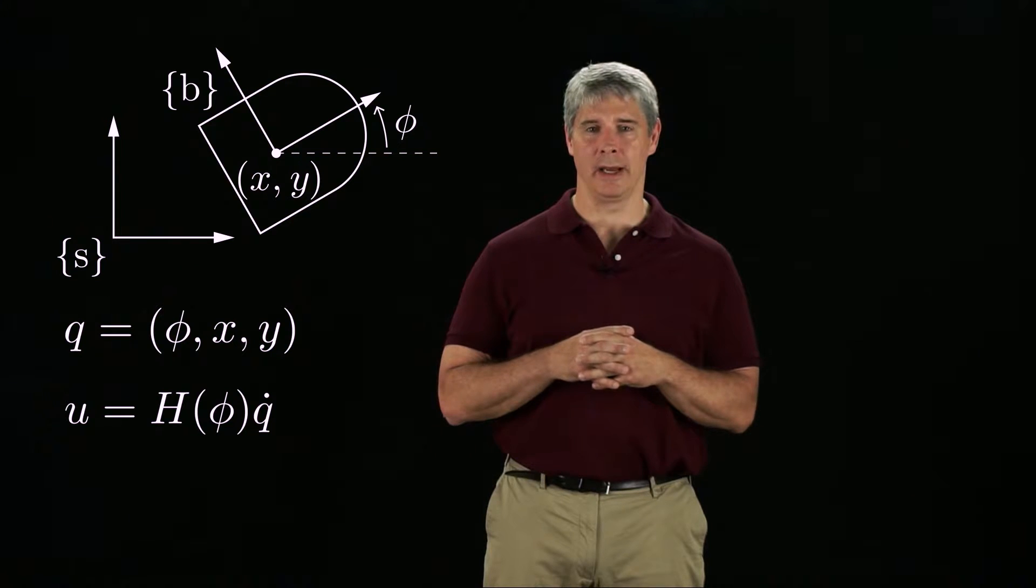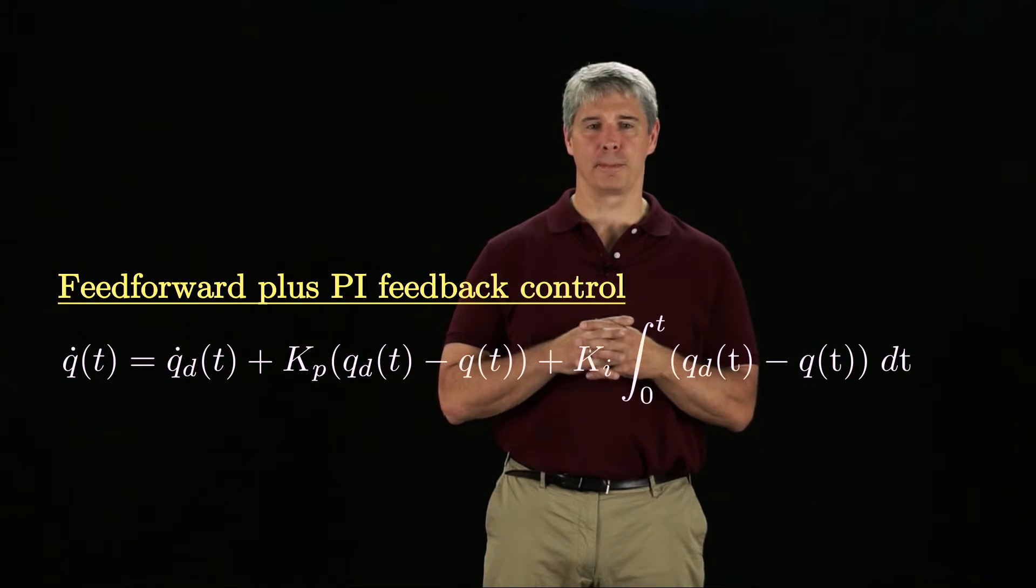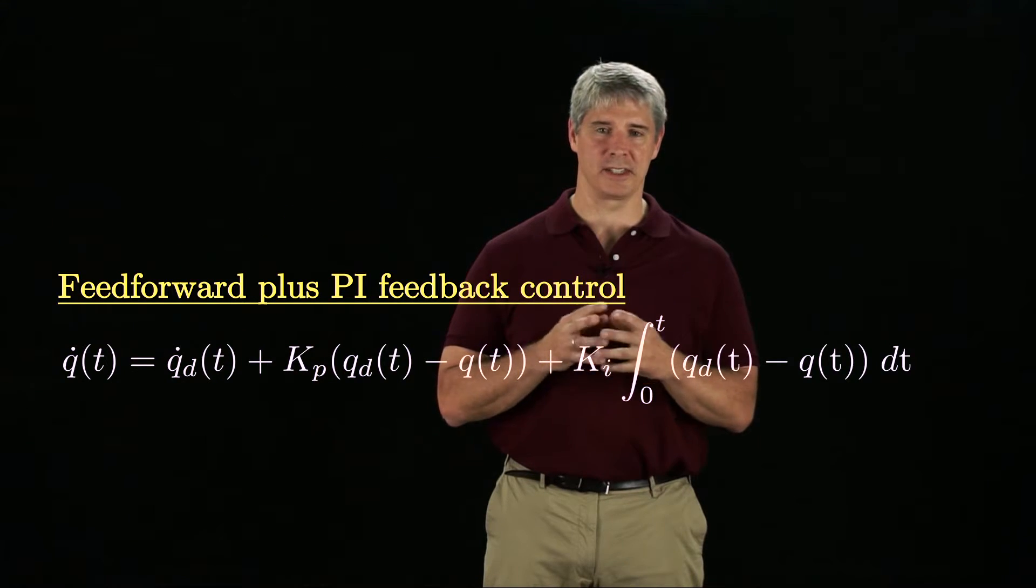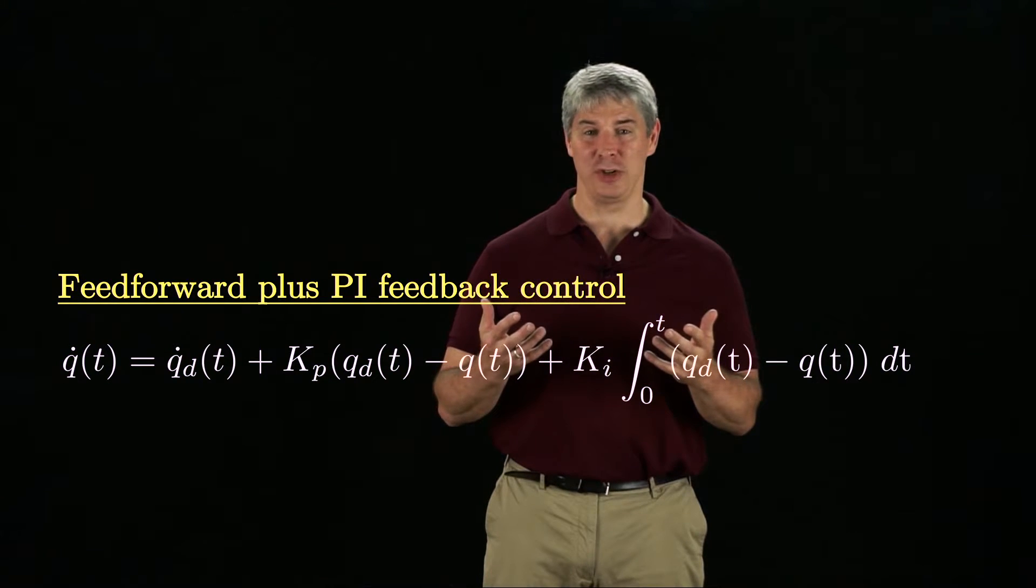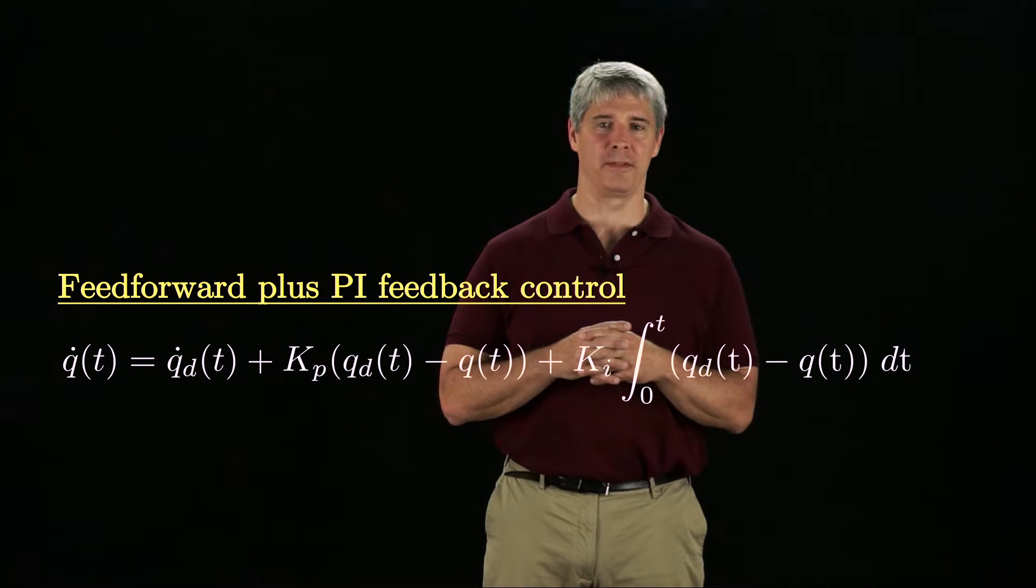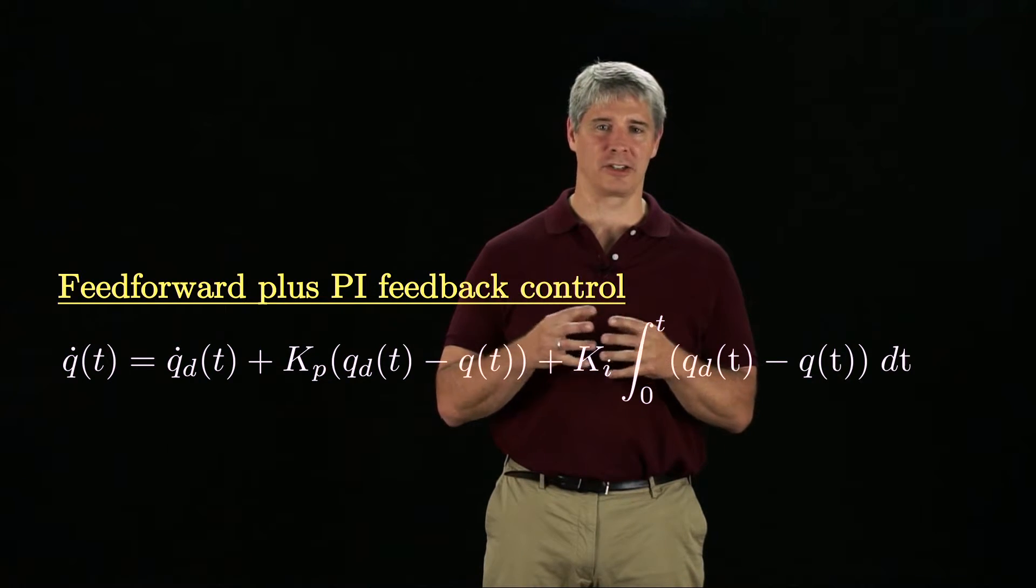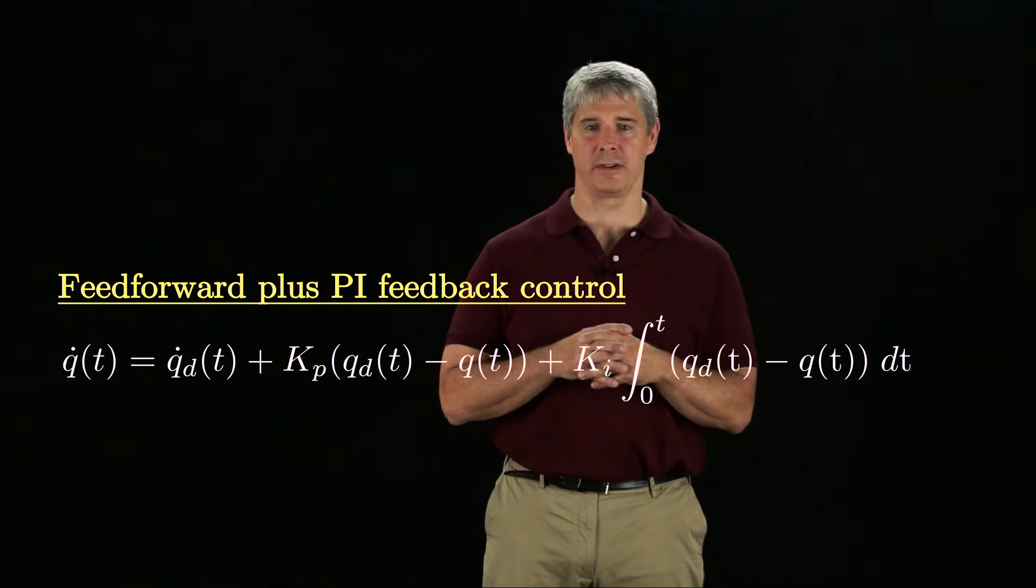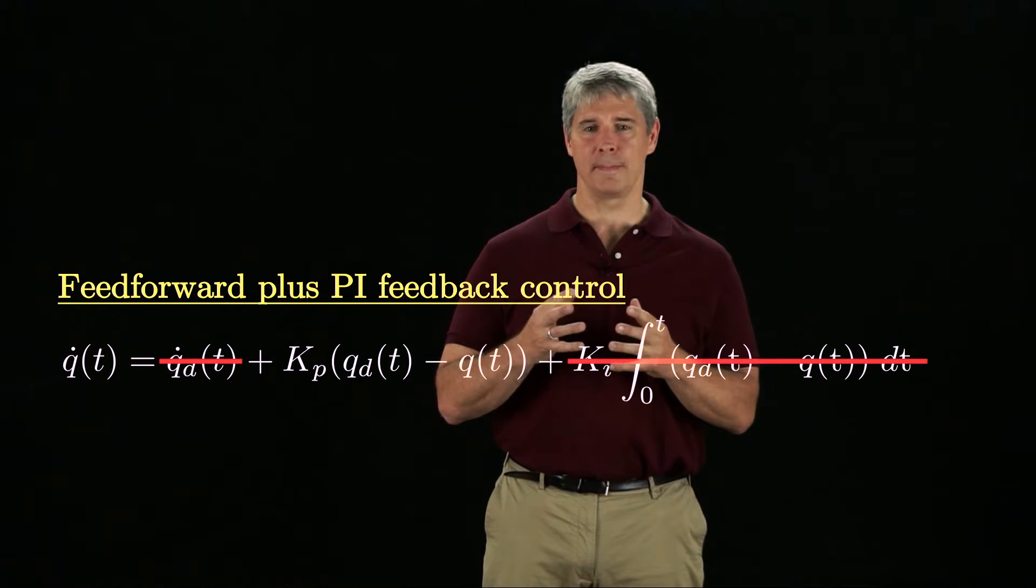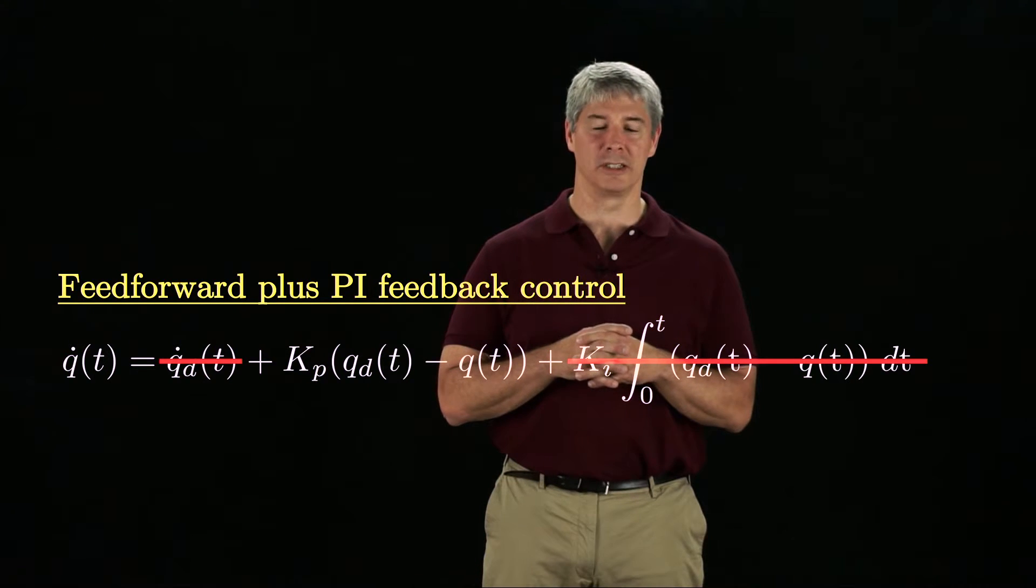Once a trajectory q of t has been planned, we can apply feedforward plus PI feedback control, as described in Chapter 11. The commanded chassis velocity q dot is calculated as the sum of the desired chassis velocity at the current time instant, plus feedback terms that are proportional to the current configuration error and the time integral of the error. Even simple proportional control can yield reasonable performance.